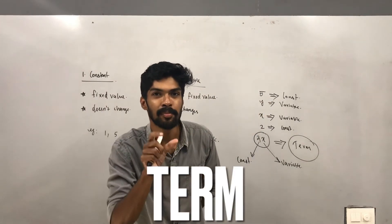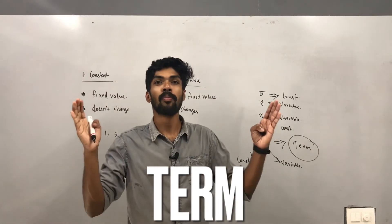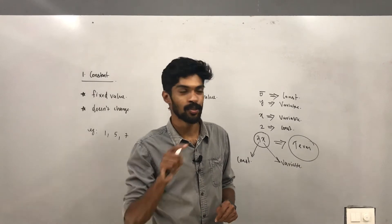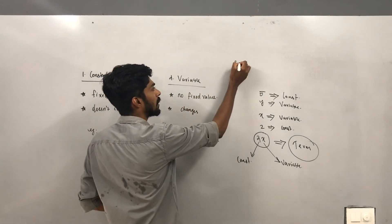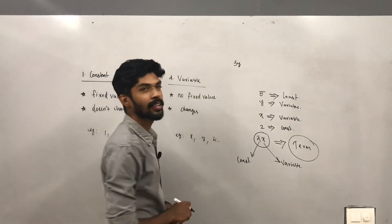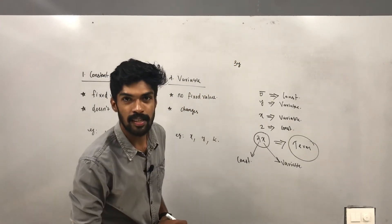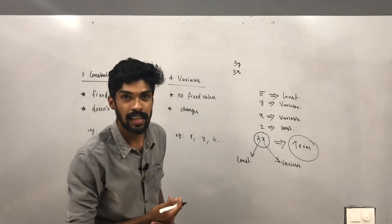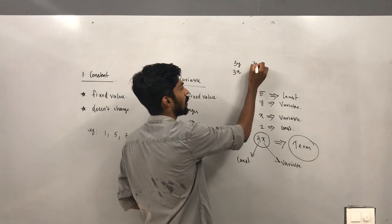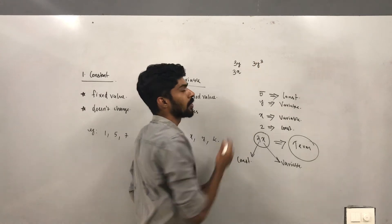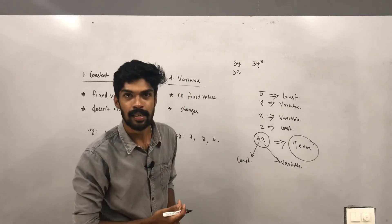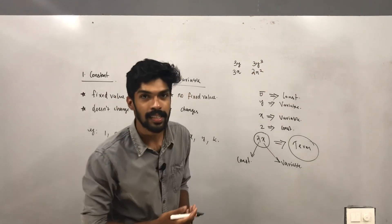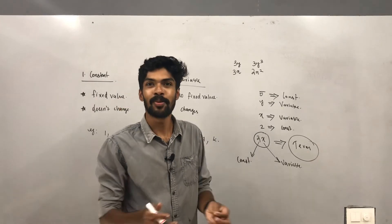So what is a term? A term is a combination of a constant and a variable. Examples: 3y is a term, 3x is a term, 3y³ is a term, 2x² is a term.